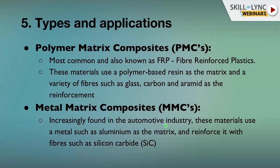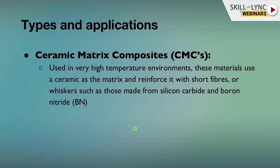Metal Matrix Composites are increasingly found in the automotive industry. They use a metal such as aluminium as the matrix, reinforced with fibers like silicon carbide for high strength and stiffness. Aluminium or aluminium alloy matrix provides high temperature capability, and MMCs are used extensively in automobile components like connecting rods and engine blocks.